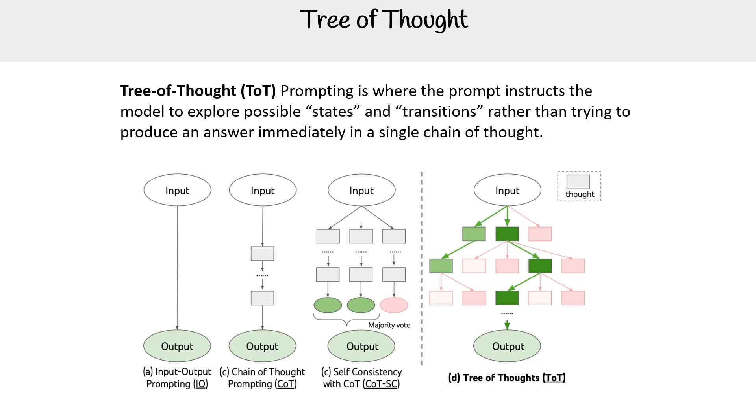And then we have tree of thought where it has multiple ways that it can go through logic. It can add branches, remove branches. The idea is that it's not taking a linear line, it's going to evaluate multiple options to get to the end.